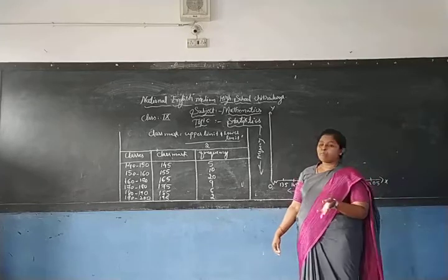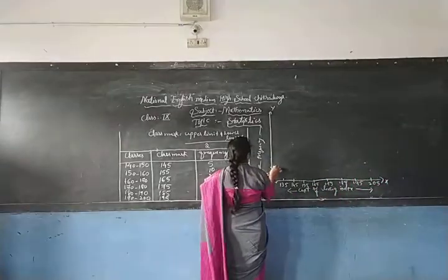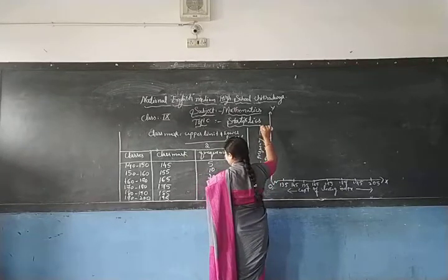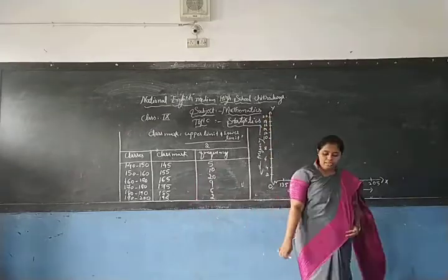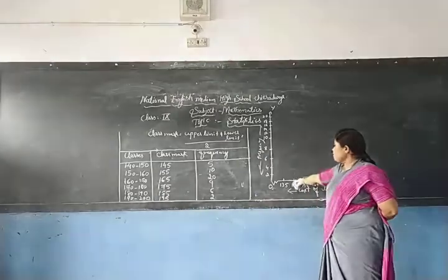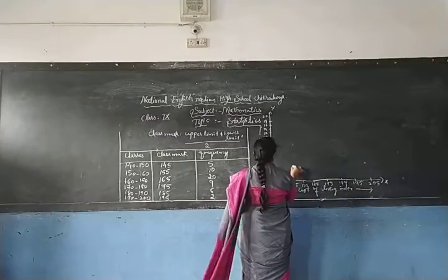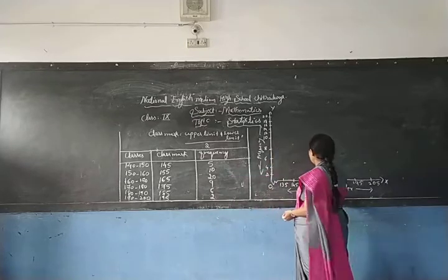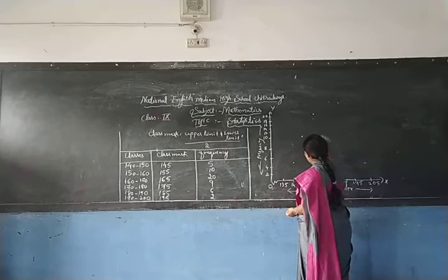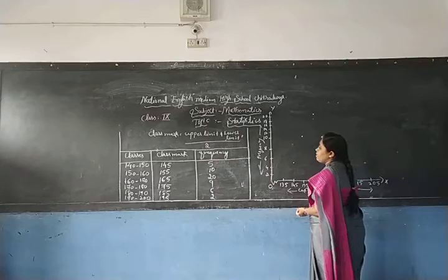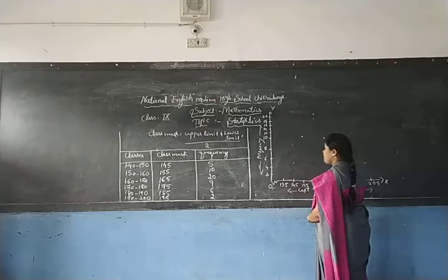Now we have to plot the class marks with their corresponding frequencies. For class mark 145, the frequency is 5. For 155, it is 10. For 165, it is 20. For 175, it is 9. For 185, it is 6. For 195, it is 2. Each point is plotted at the intersection of the class mark and its frequency.